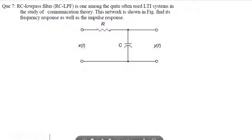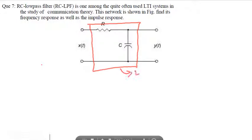Question number seven: the RC low-pass filter is one of the most commonly used LTI systems. This LTI system has input x(t) and output y(t). Given the network shown in the figure, find the frequency response as well as the impulse response. This is a very important question.